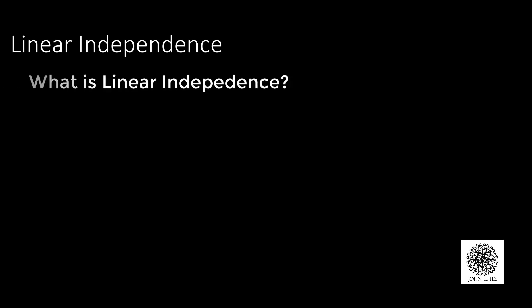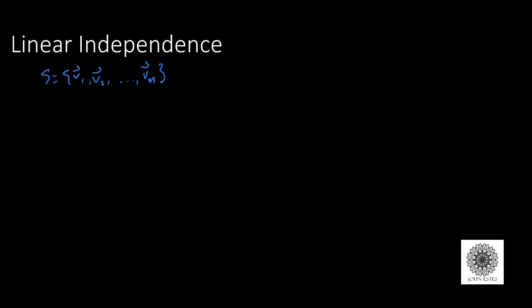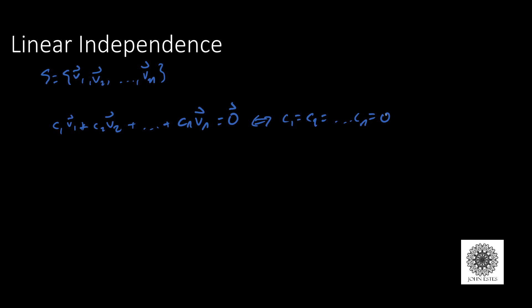Let's look at the idea of linear independence. A set S of vectors v1, v2, up to vn is said to be linearly independent if the only way to get the zero vector from a linear combination — c1*v1 + c2*v2 + ... + cn*vn = 0 — is if all the scalars c1, c2, and so on are zero.